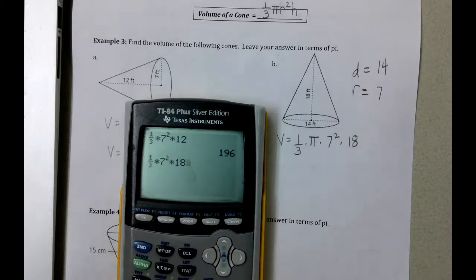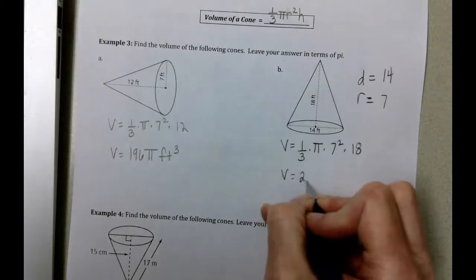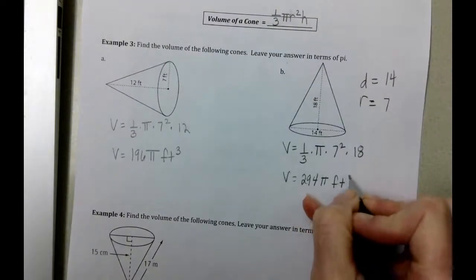So I'll change that to 18. One-third times 7 squared times 18. I did not type in the pi because we're going to leave our answers in terms of pi. When we press enter here we get 294 pi, and our units are feet cubed.